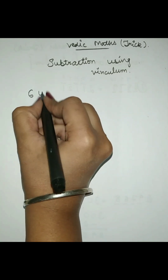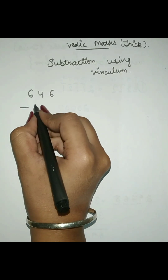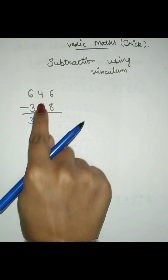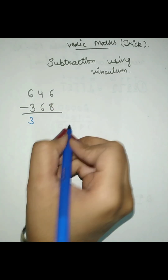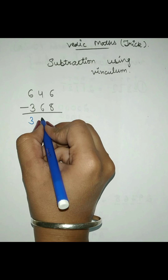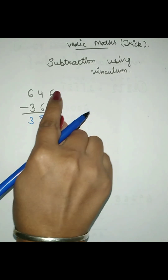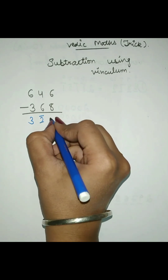If we want to subtract numbers like 646 minus 368, then for subtracting by using vinculum, firstly 6 minus 3 is 3, so write 3 here. But 4 minus 6 is not possible. So after subtracting we get negative 2, which is written as 2 bar. And next 6 minus 8 again is not possible, so we get minus 2, which is written as 2 bar.